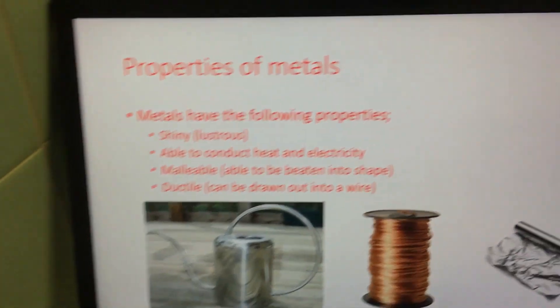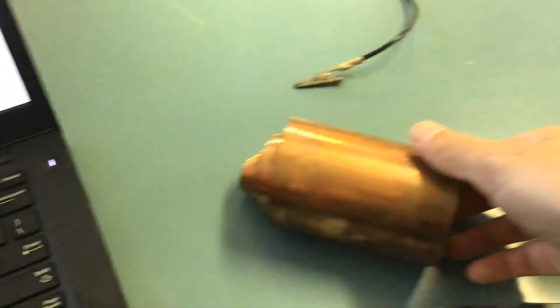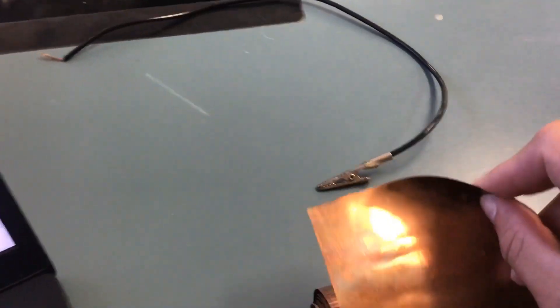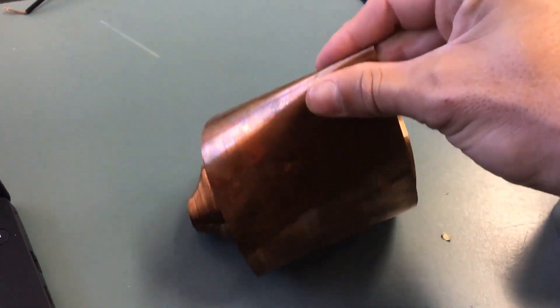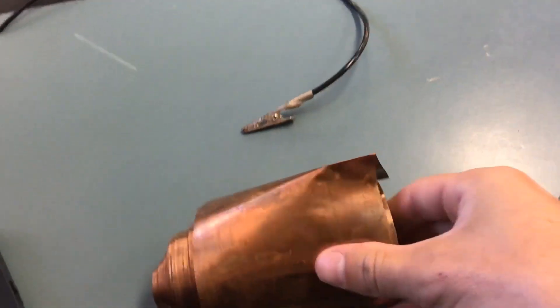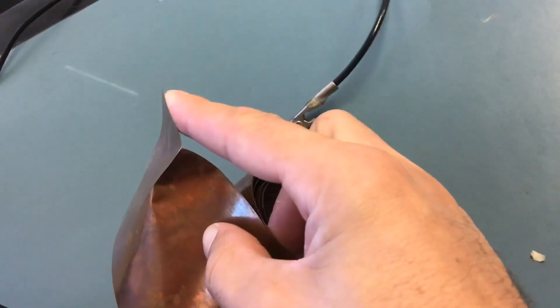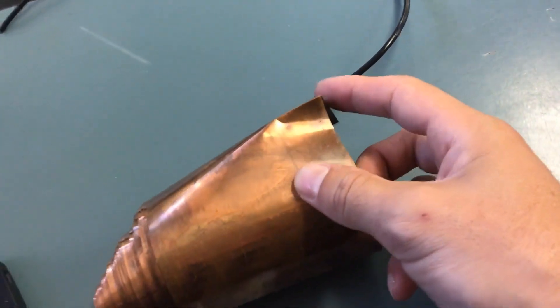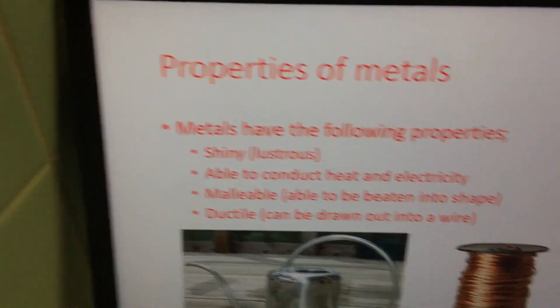So let me show you what I mean by malleable. Here I can have my copper, and I can bend it quite easily. I can actually put a crease in the copper wire. I can do that quite easily, and it has not broken the copper. It has not split it in half. So that's what is meant by malleable.